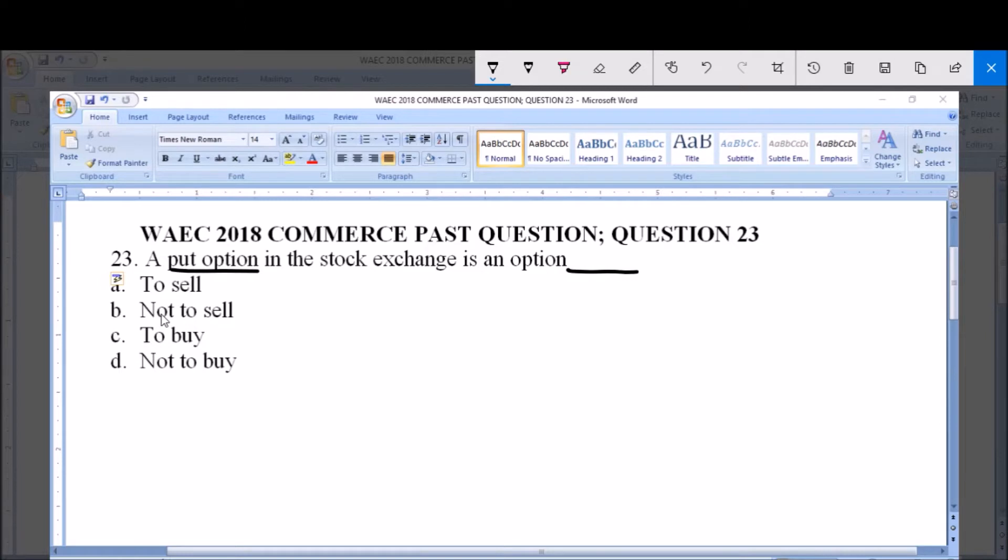The options are: a) to sell, b) not to sell, c) to buy, d) not to buy. The correct option here is option A, to sell.